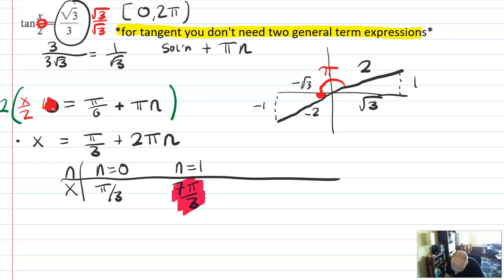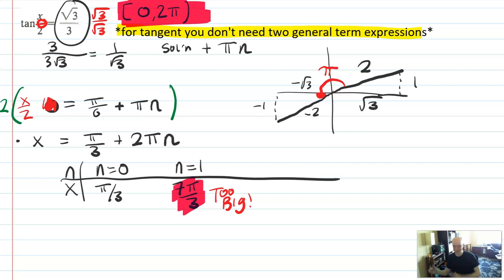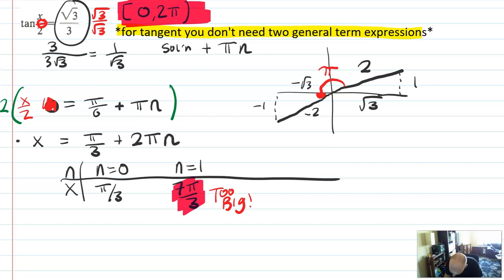This is too big. I'm outside the interval 0 to 2π for the problem I was attempting to solve. That's another thing that can happen — you get outside your interval immediately. That means we have only one solution: x equals π over 3.